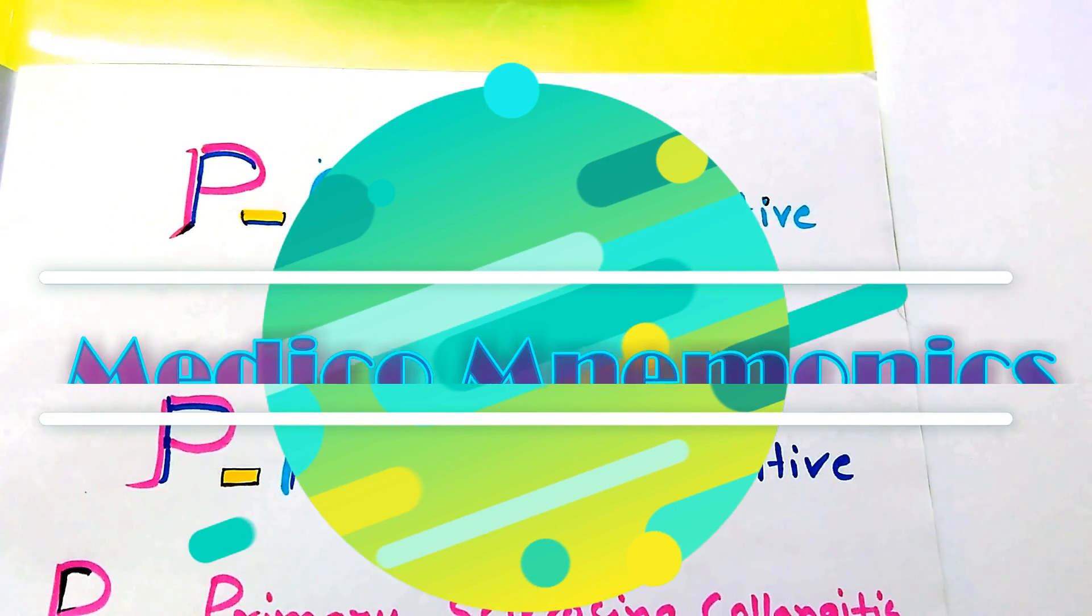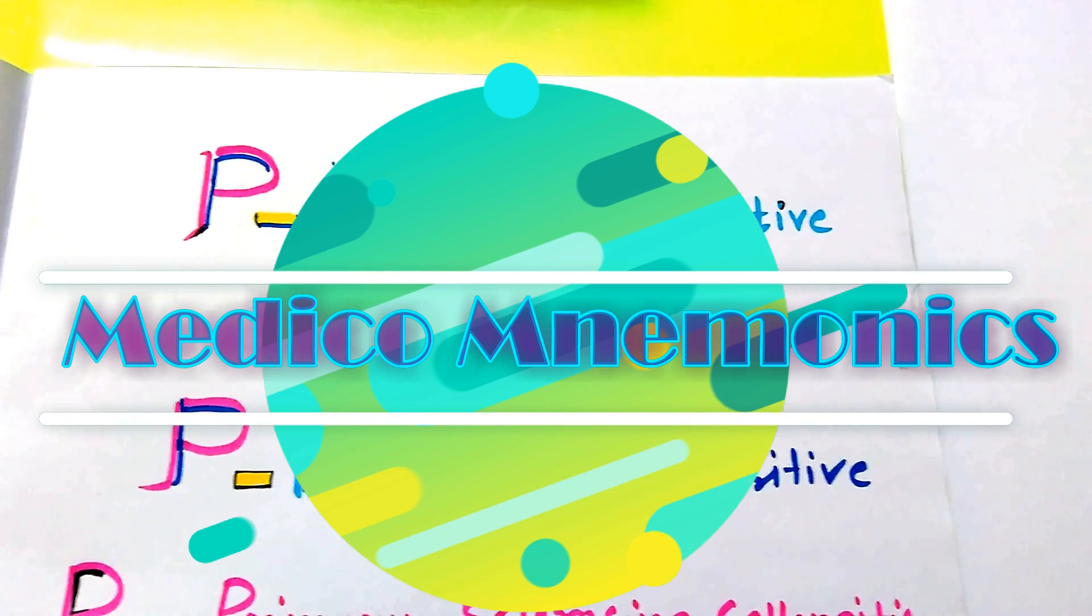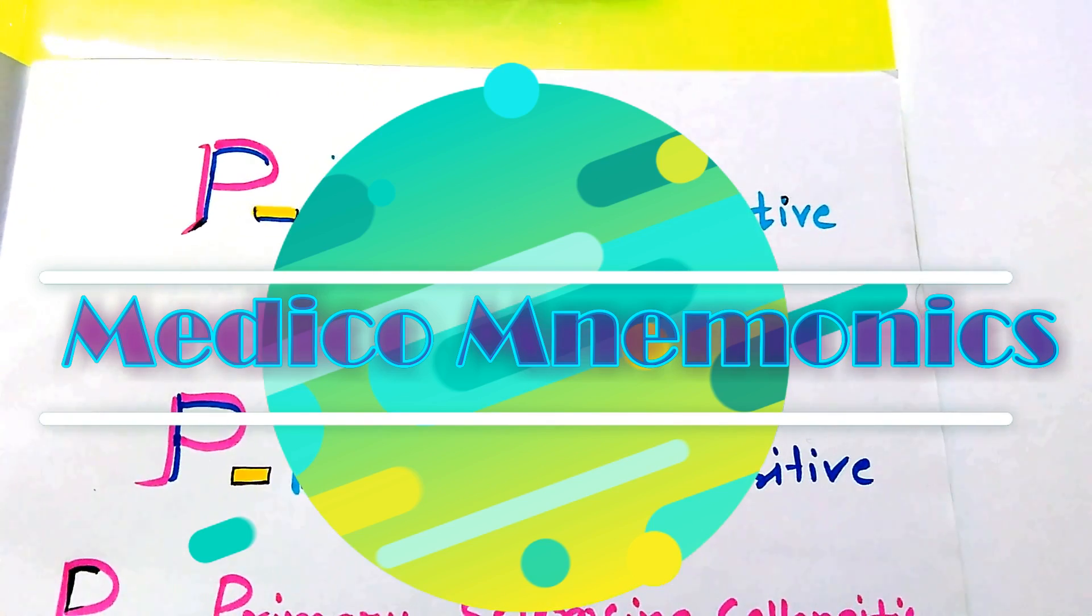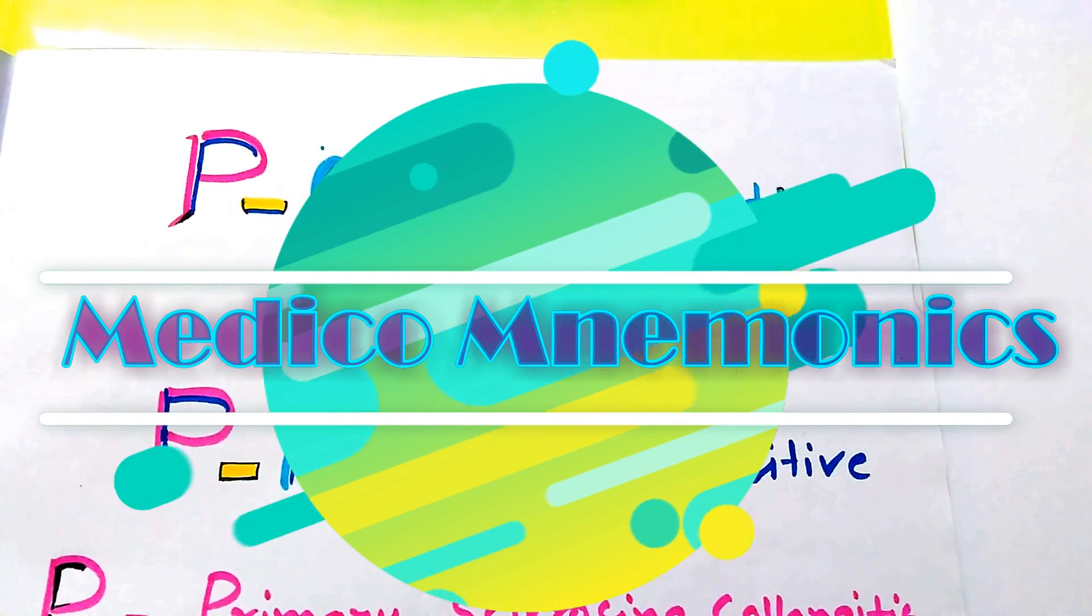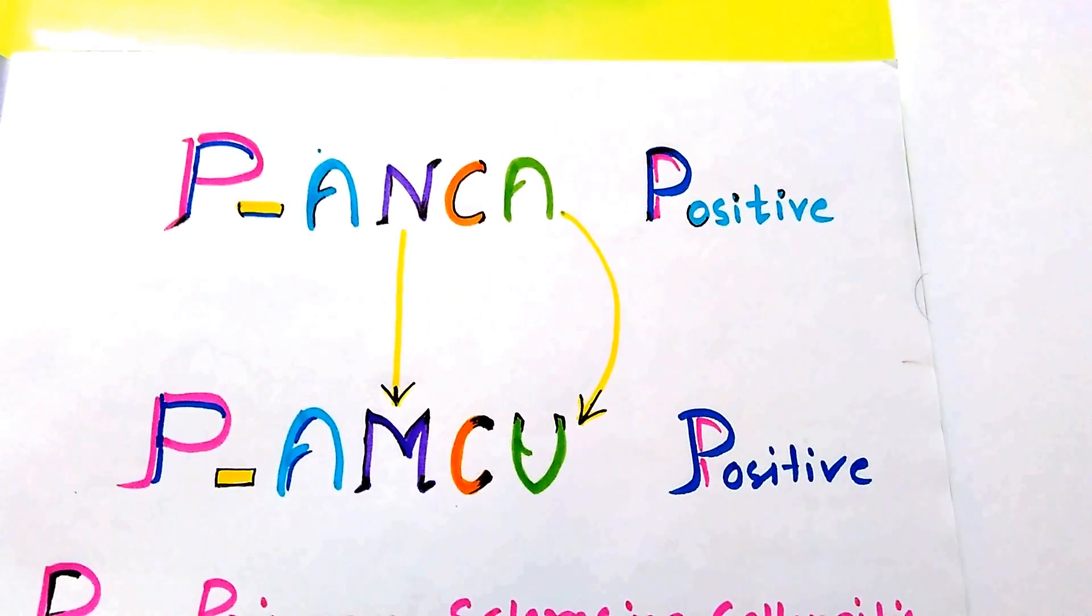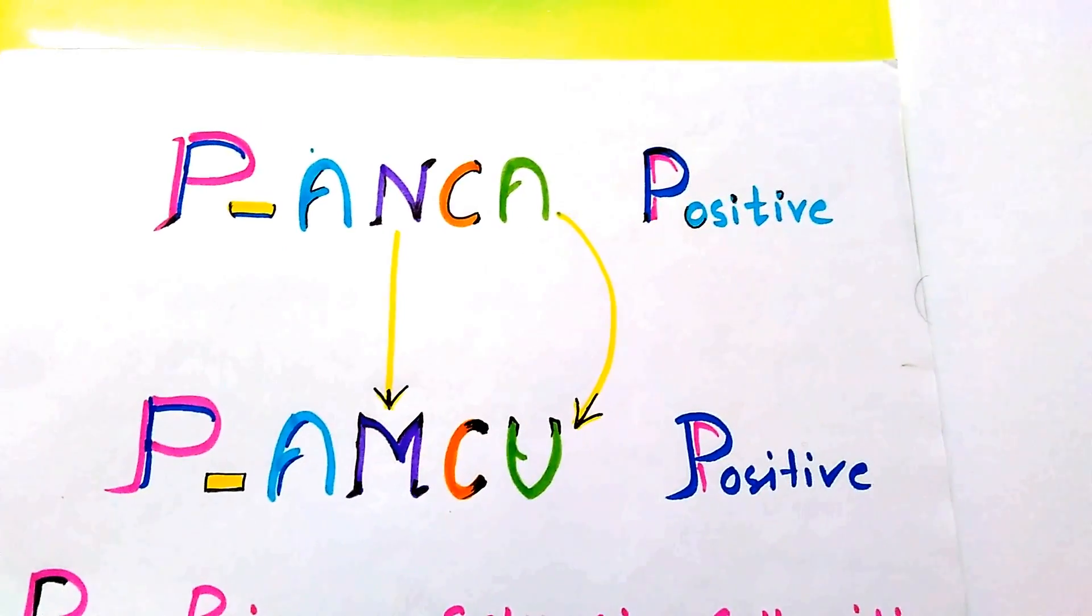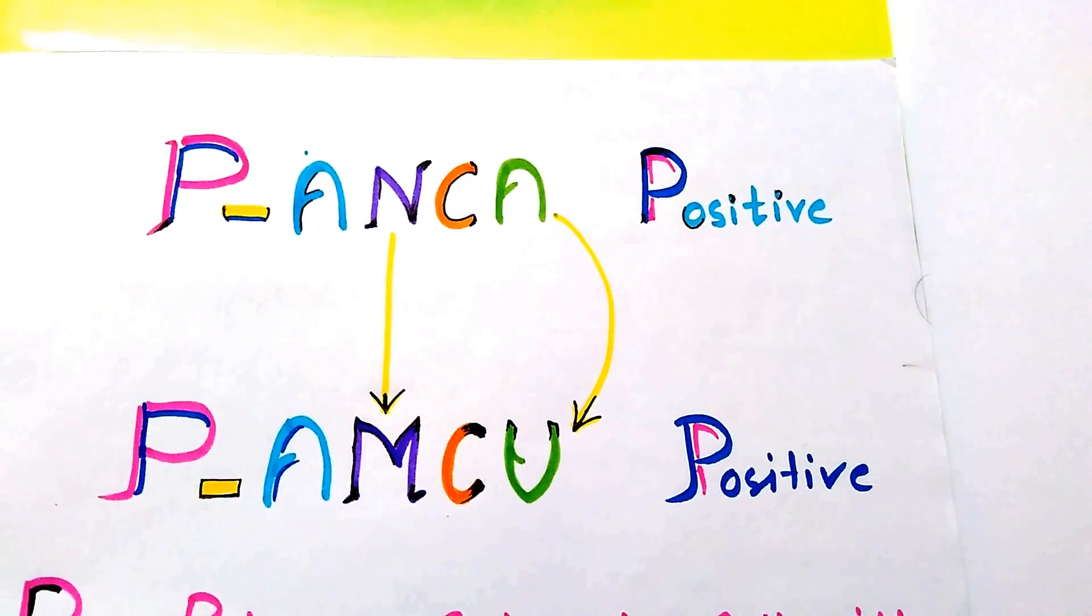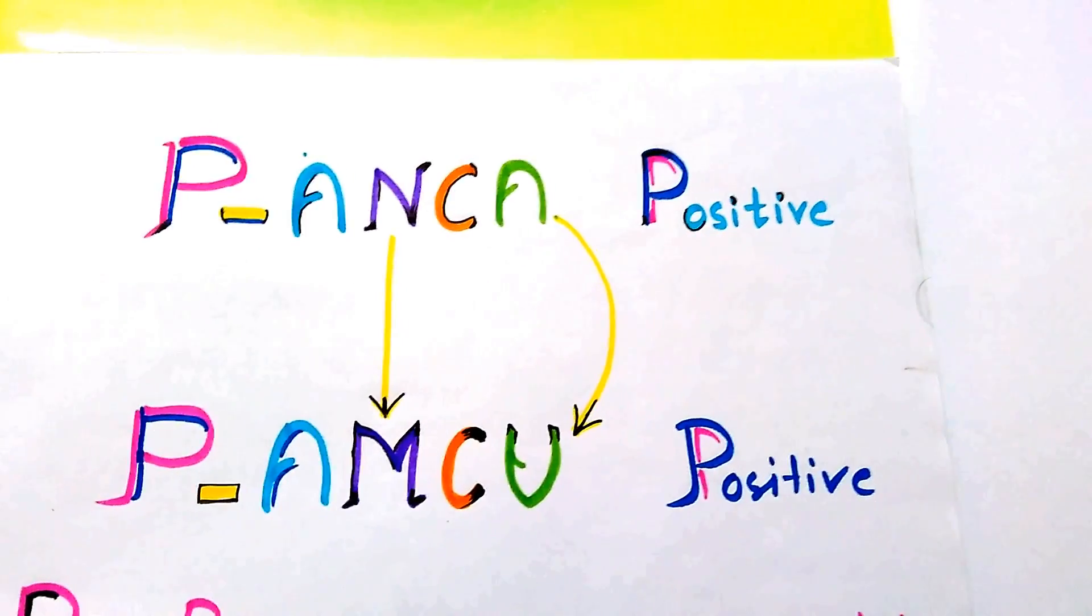Hello and welcome back friends. There was no video for a long time, but I am back again with a series of interesting mnemonics. Today's mnemonic is for P-ANCA positive conditions, that is perinuclear antineutrophilic cytoplasmic antibodies.